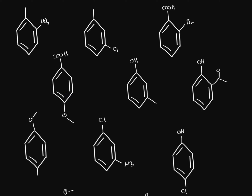Some things you have to consider: number one, we have ortho and para directors. When you have electron-donating groups like a methyl or an ether, those will be ortho and para directors — meaning they will direct to ortho and para positions. On a benzene ring, compared to the methyl, the ortho positions are these two, and the para position is this one.